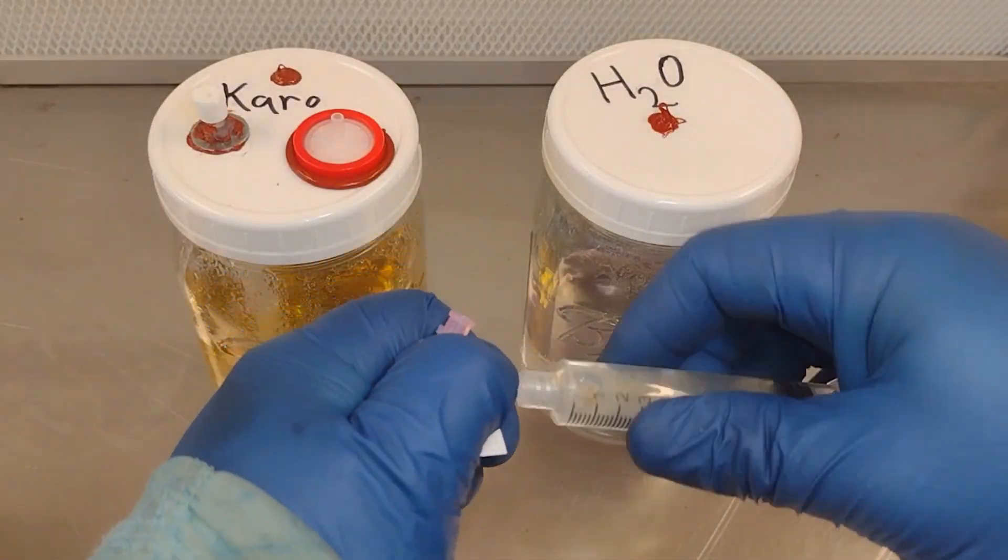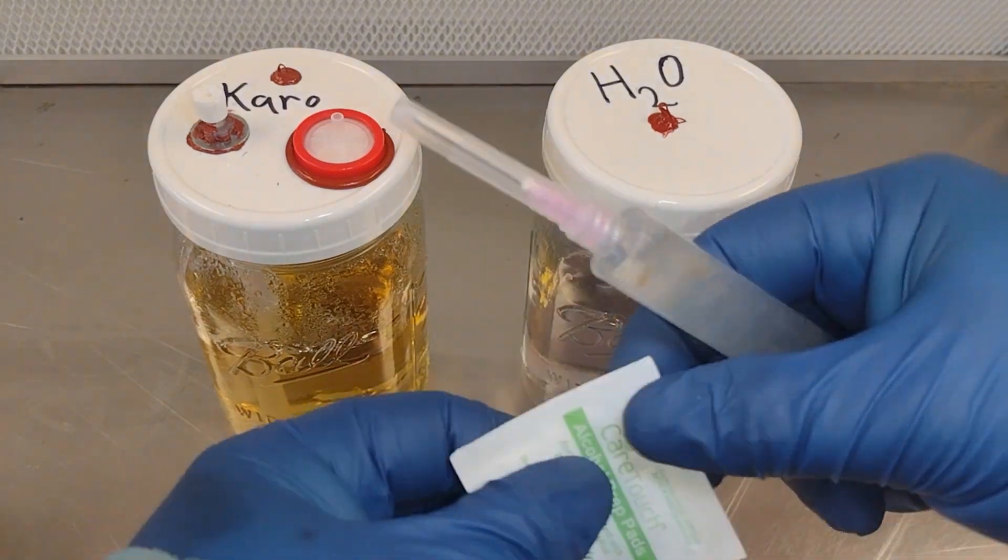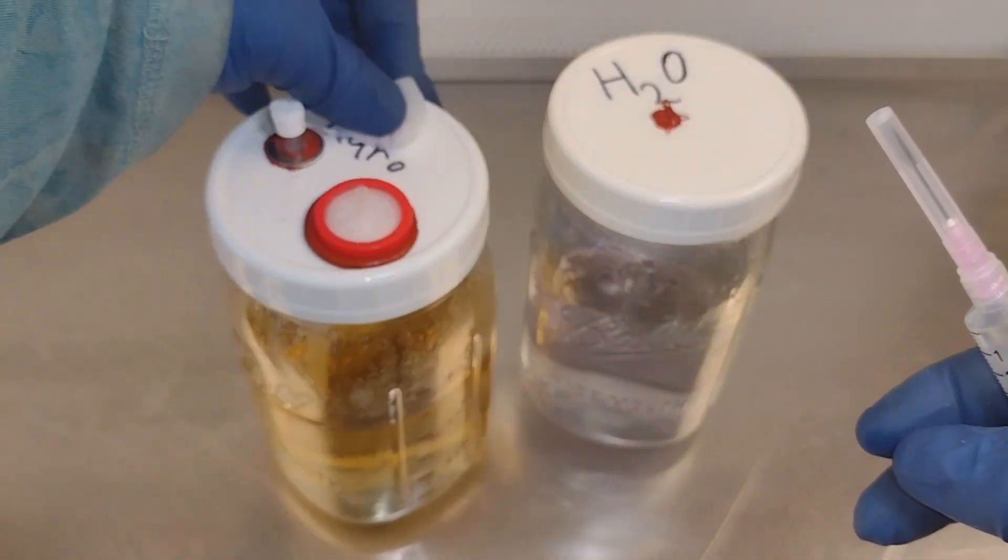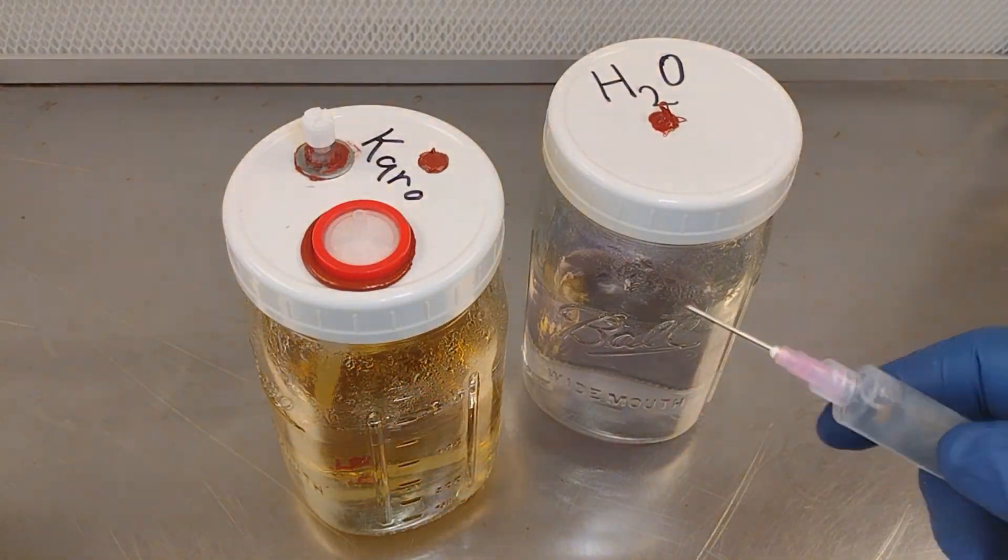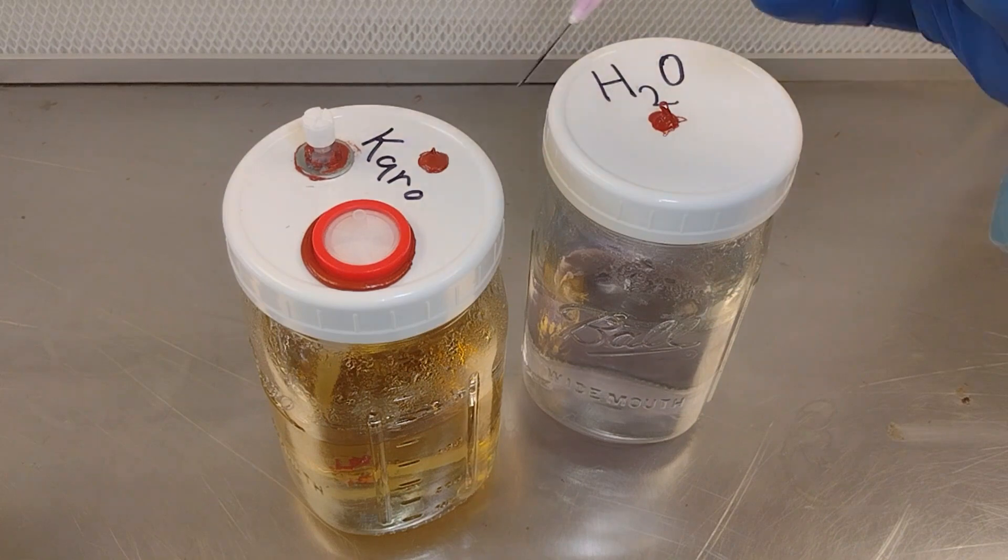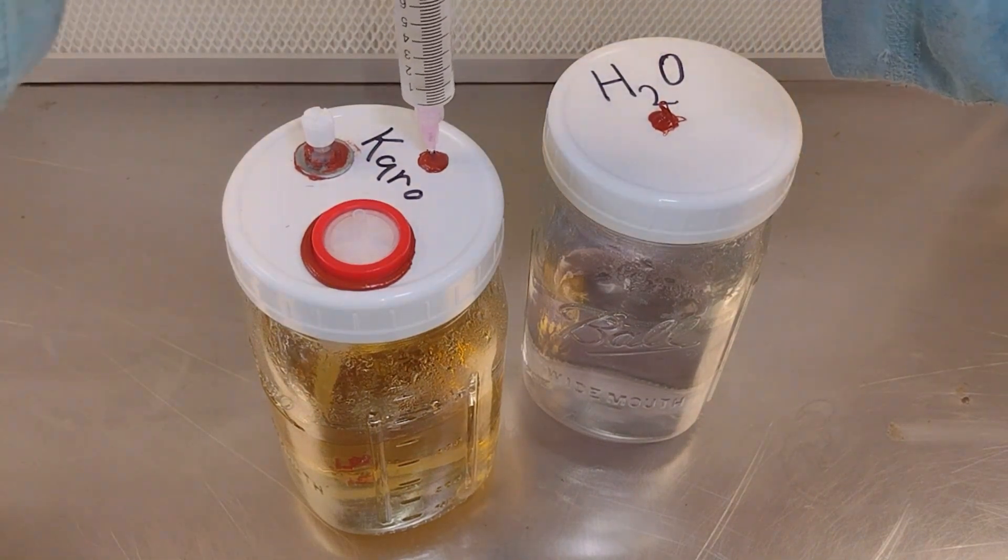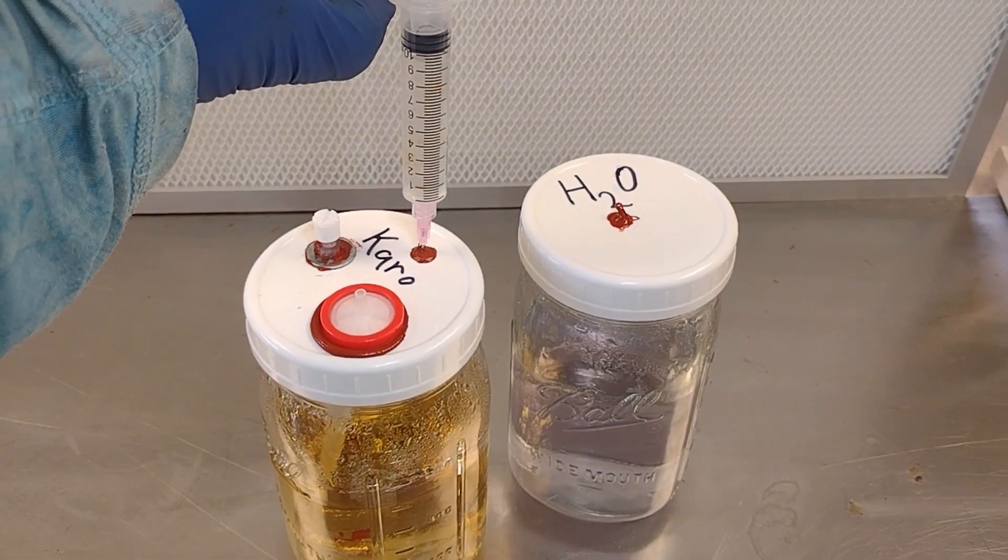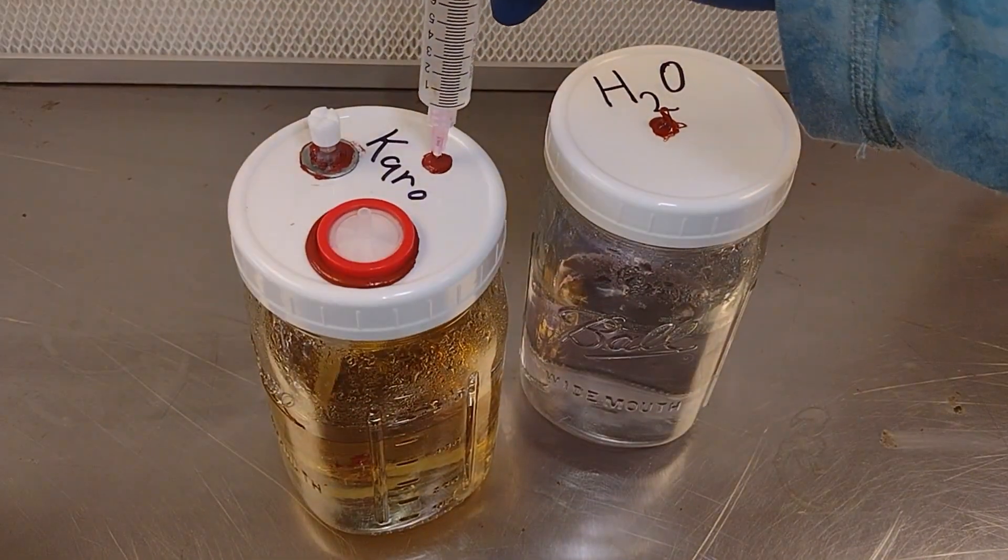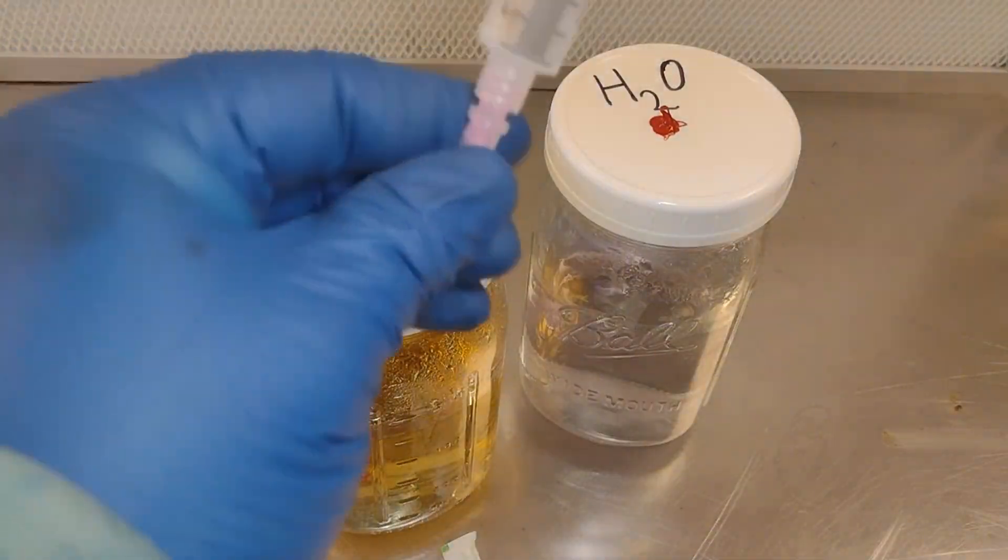So first what I'm going to do is undo my sterile syringe, and I'm going to unscrew the tip of my liquid culture. Next I'm going to wipe down my injection port, and the last thing I'm going to do is heat up the tip of the needle. I'm going to inject 1 cc of fluid into my liquid culture jar. And that's it. Now I'm going to cap it and I'm done.